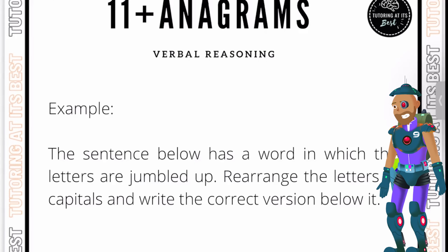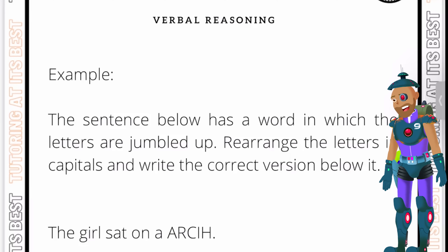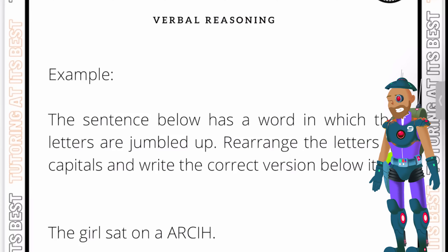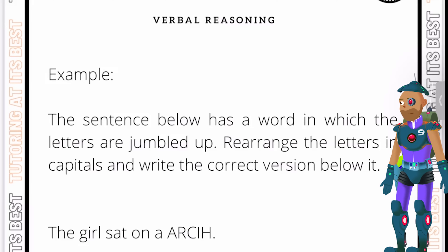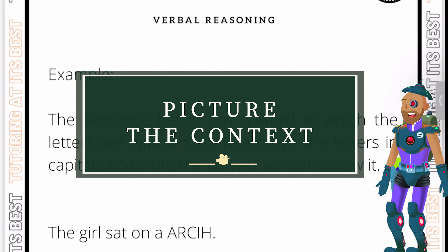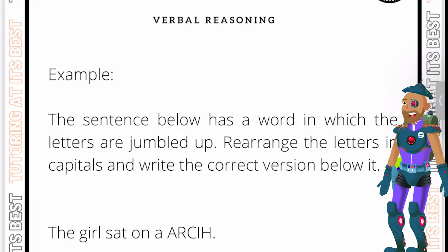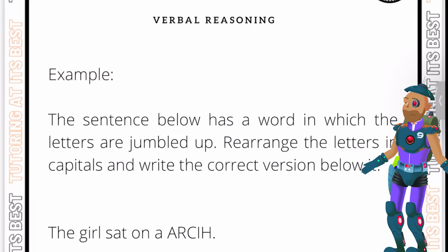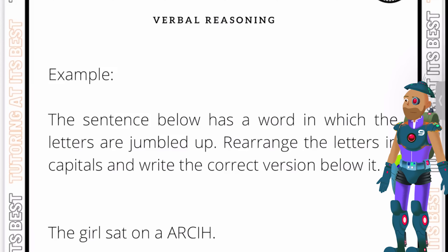So let's rearrange the letters in bold and write the correct version below it. There is no clear single way of solving this — I'm only going to give you sensible advice to guide you. Firstly, look at the context. In a simple question like this, the first thing you think of that someone would sit on is a chair, so obviously this would be the answer. Thinking about the sort of thing that fits in place of the jumbled letters gives you a real advantage.